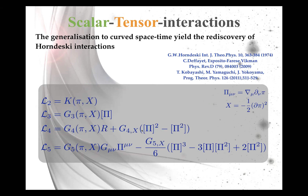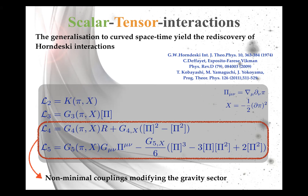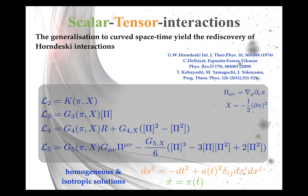These non-minimal couplings modify the gravity sector, so if the Lagrangian includes L4 and L5, you no longer have GR but modified gravity. Applying this to cosmology is straightforward: with a scalar field you can construct homogeneous and isotropic solutions where the metric depends only on a time-dependent scale factor, and the scalar field has a background configuration with only time dependence.